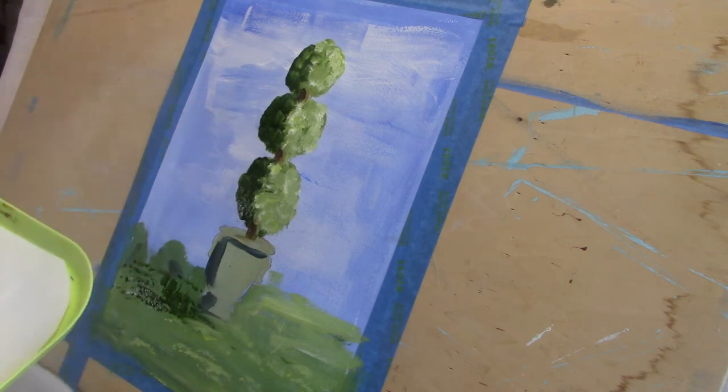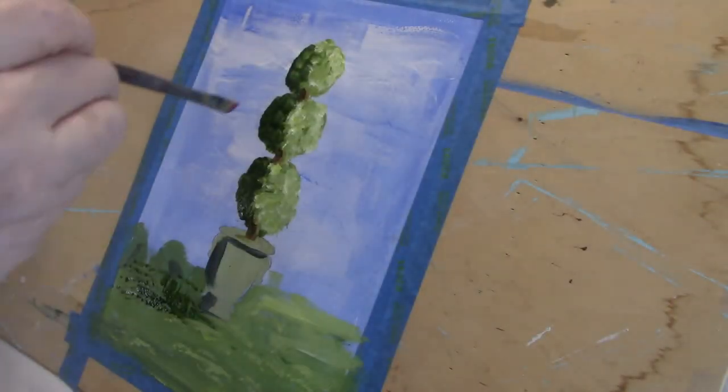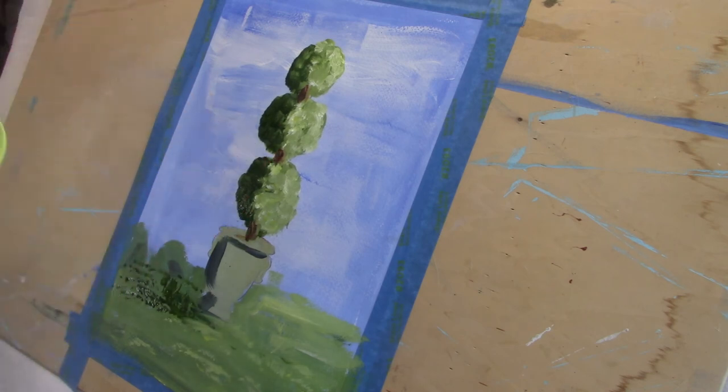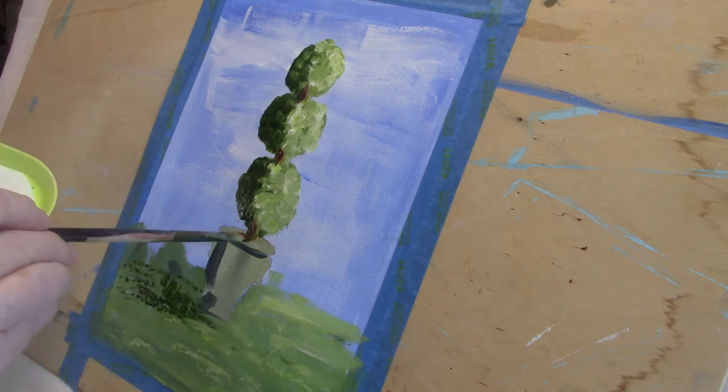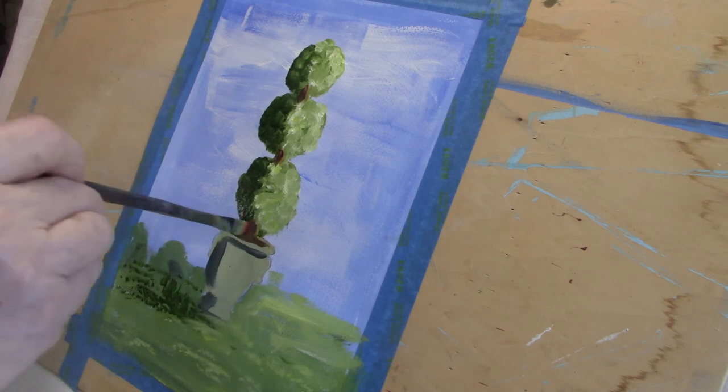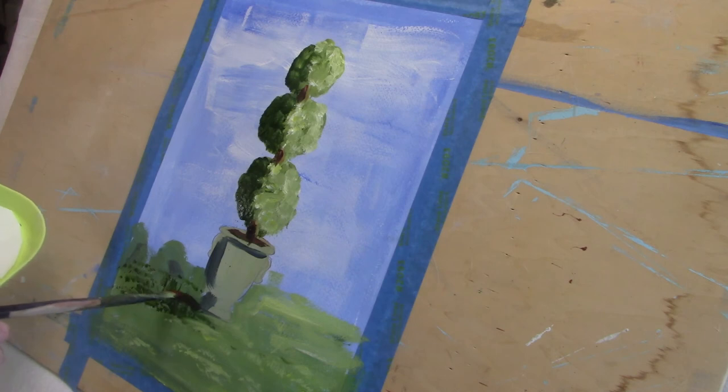I almost always put alizarin crimson on my stems and tree trunks, and especially when I'm painting roses, because I think that you see the red in a rose stem, don't you? But in any case, I think it makes things look lively. I think it livens up the picture no end.